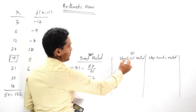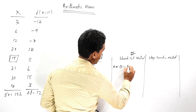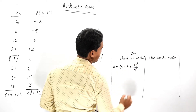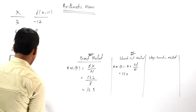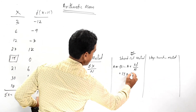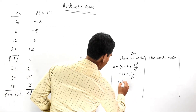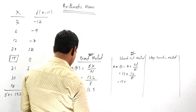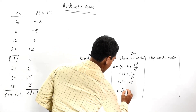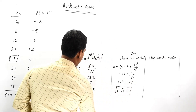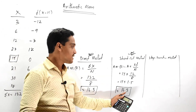Now we find the arithmetic mean under the shortcut method by applying the formula: A plus summation of D divided by n. So that is 15 plus 12 divided by 8, which equals 15 plus 1.5, equals 16.5. The arithmetic mean under the shortcut method of the given individual series is 16.5.